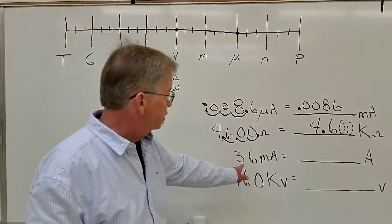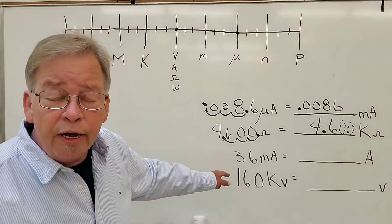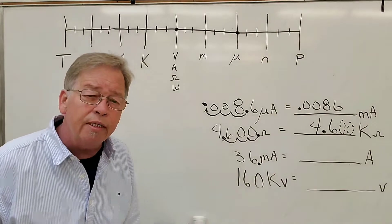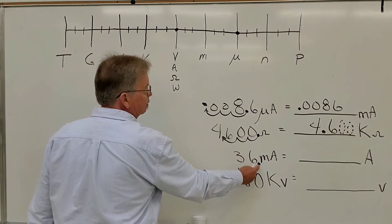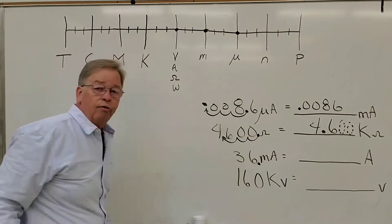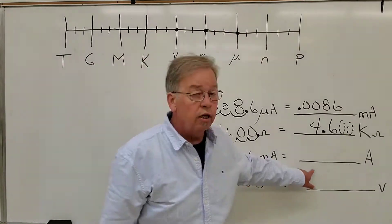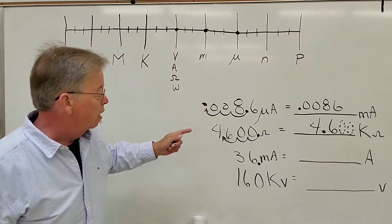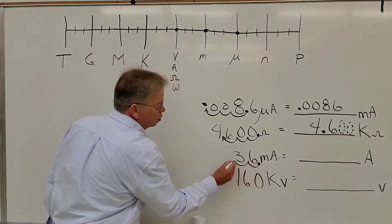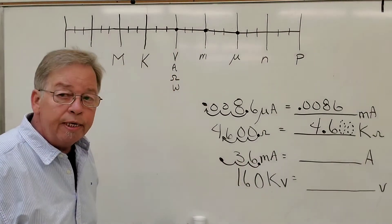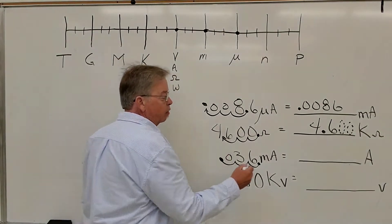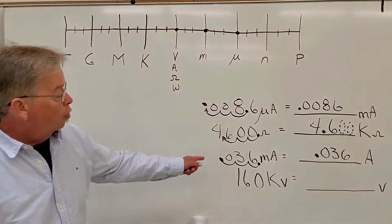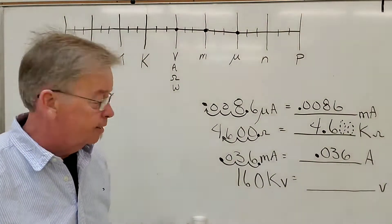Now, 36 milliamps — again, it doesn't have a decimal point, so I know it's right behind the six, and it's sitting on the number line on the milli spot. So I need to move it to the regular amp spot. From the milli spot to the regular amp spot, it's three places to the left. I fill in those blank spots with zeros, so it becomes 0.036 amps. So 36 milliamps is only 0.036 amps.